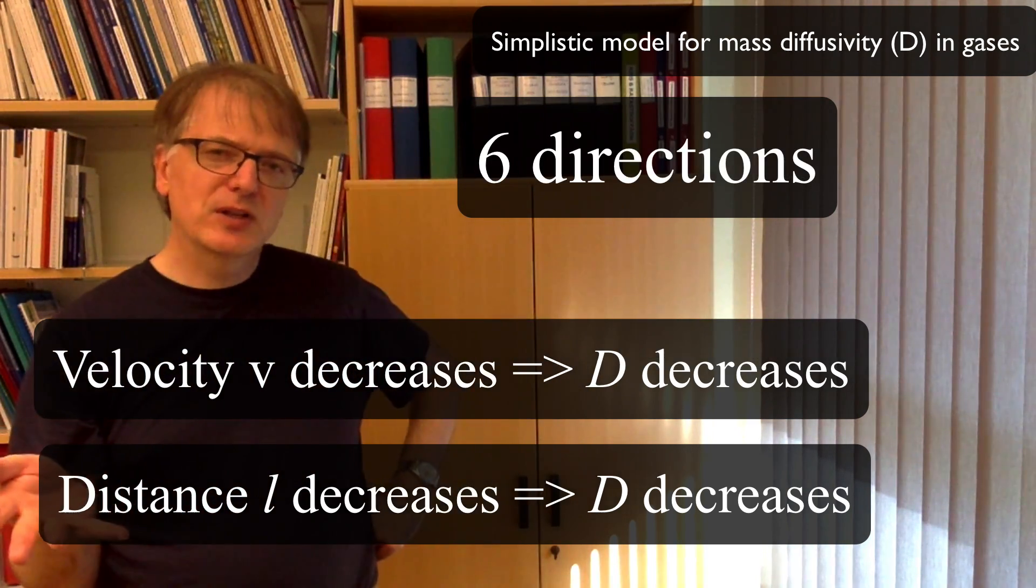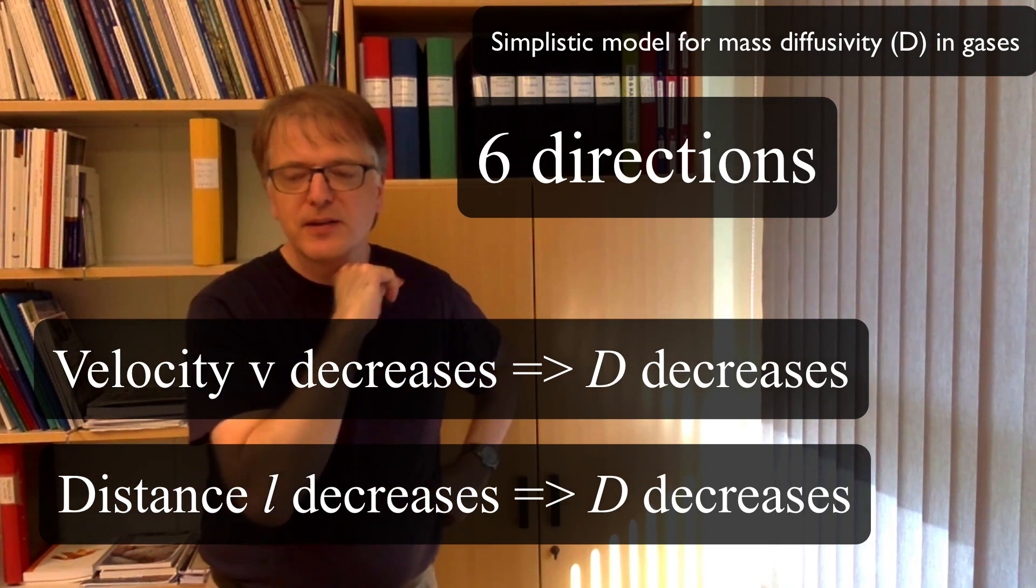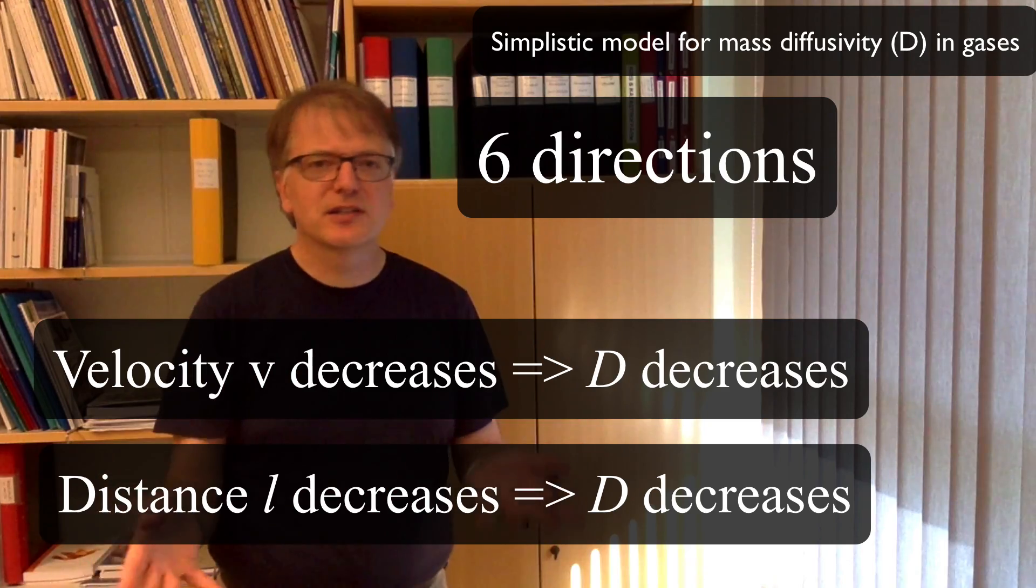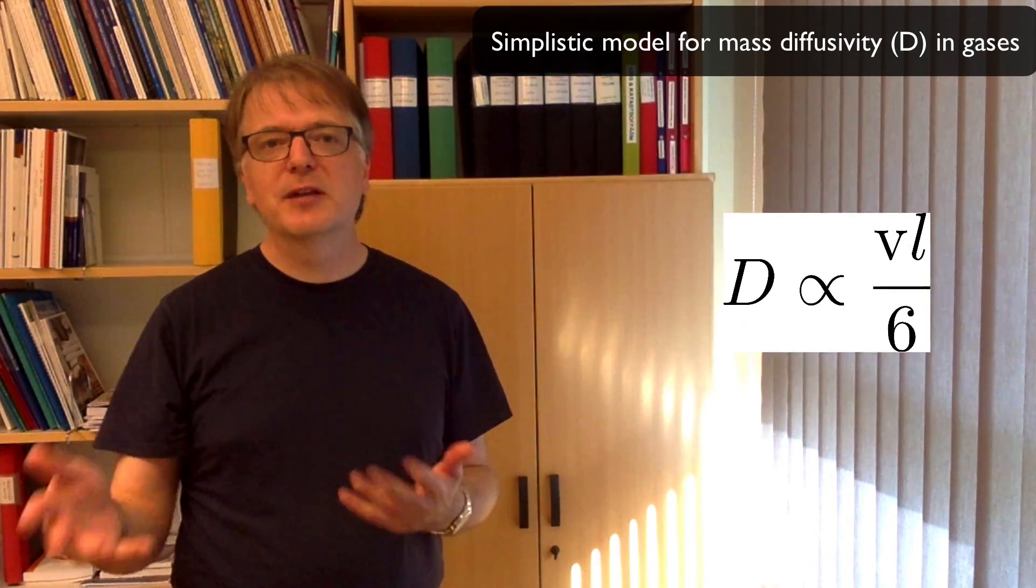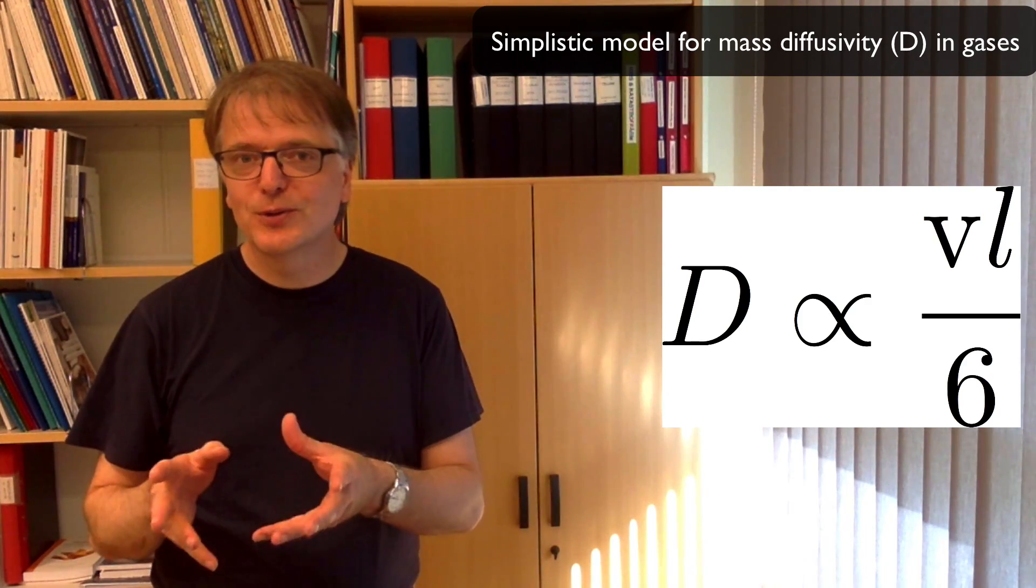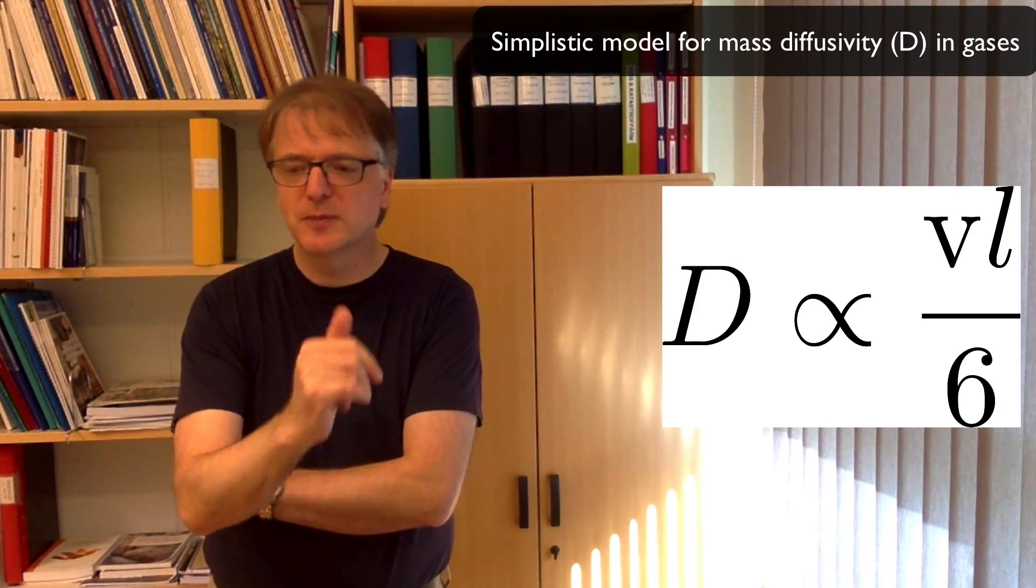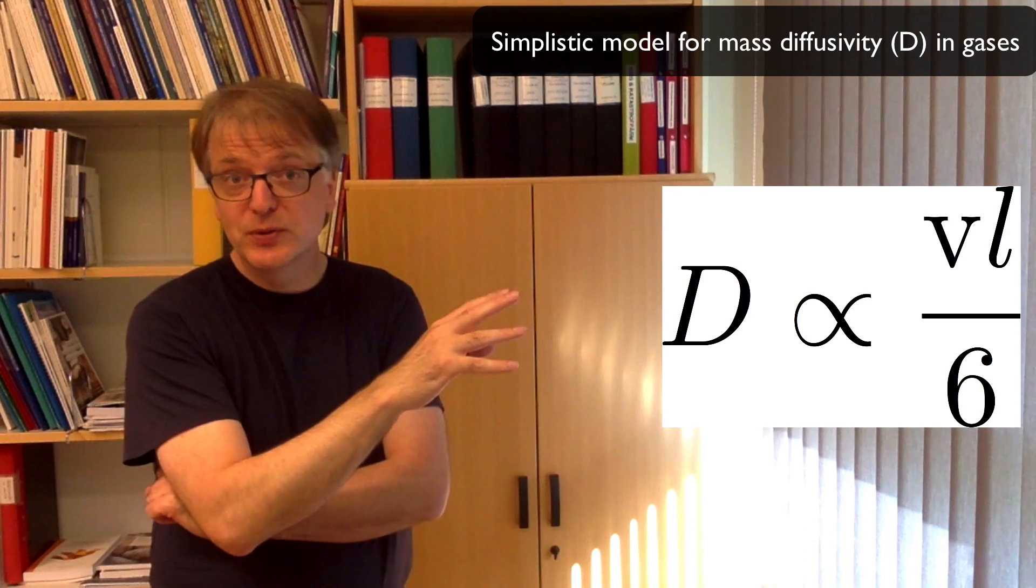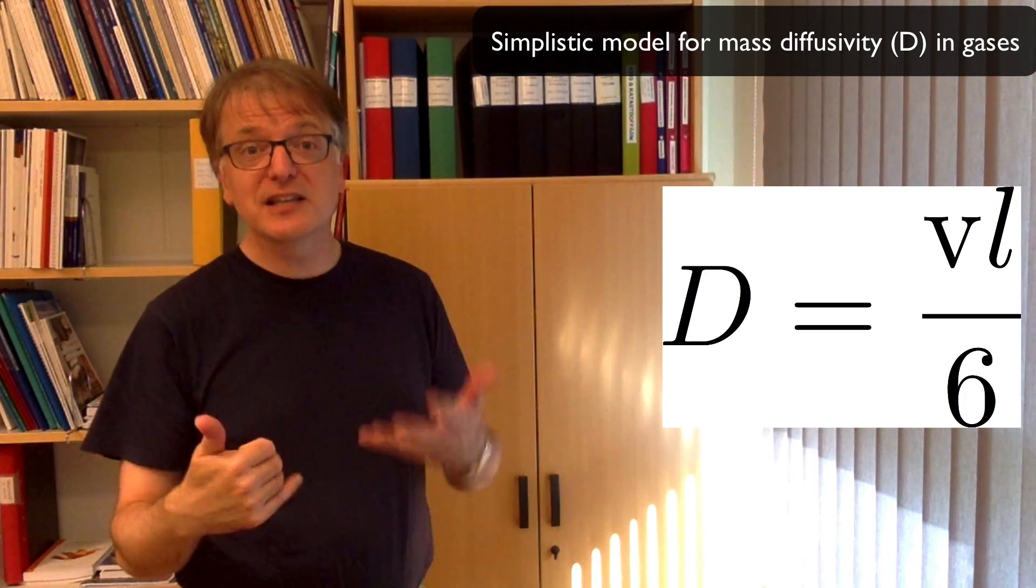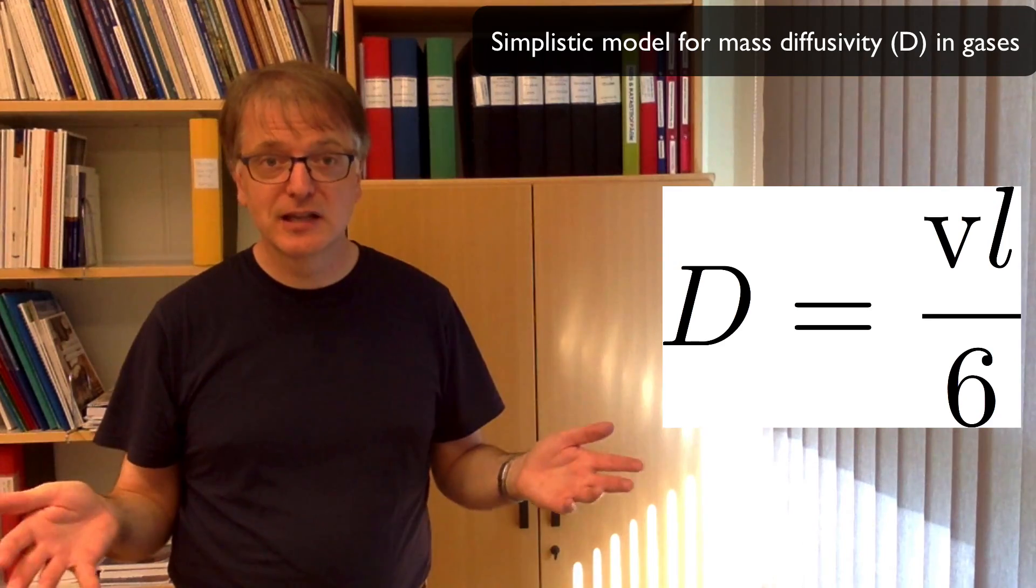Well, it seems that the diffusivity should be proportional to the velocity and the distance between collisions and then it has something to do with how many directions. So let's just take the velocity times the distance divided by six. There are arguments that you should divide by three but let's skip the details and just say as simple as possible. So the diffusivity is proportional to this but let's just assume that it's equal. That the diffusivity is the velocity times the distance between collisions divided by six and see what happens.